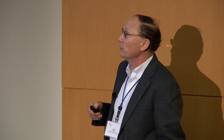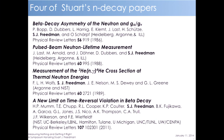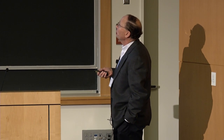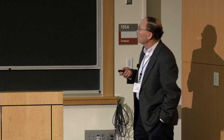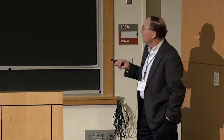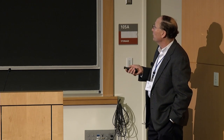I picked out four of Stuart's important papers. I'm going to spend more time on the beta symmetry and a bit more on T-violation, and tell you about the experiments and their impact. Starting with the beta decay symmetry of a neutron — basically measuring the vector and axial vector weak coupling constants. The basic idea is that the parity-violating nature of neutron decay gives rise to a correlation between the neutron spin and the emerging electron's momentum.